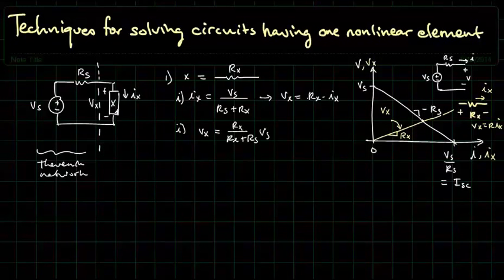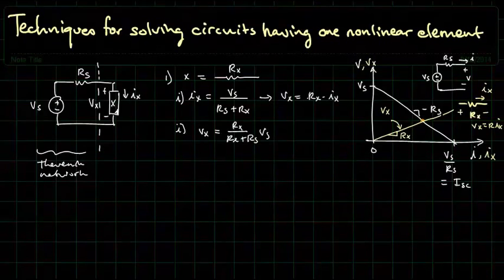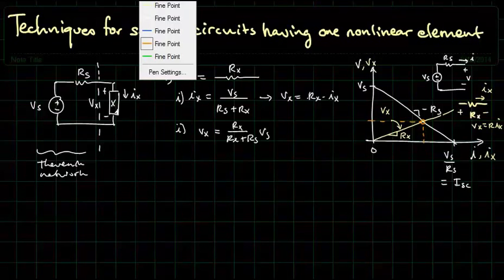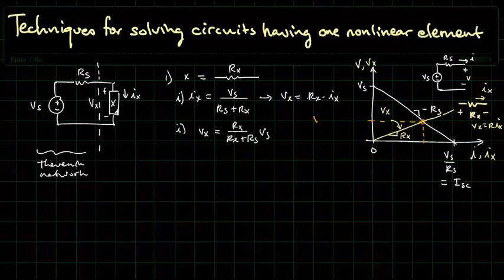And if we connect this element X, Rx, to our Thevenin network, then at the point that we connect it, we're saying that the two currents, I and Ix, must equal each other because now it's a series circuit. And secondly, the voltages V and Vx must also be equal because they share the same branch or the same two nodes. Therefore, we can claim that the solution to our circuit is actually the intersection of these two lines. And we can find that the voltage here is going to be Vs times Rx over Rx plus Rs.